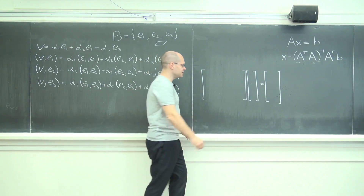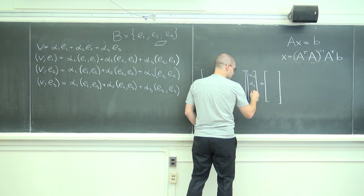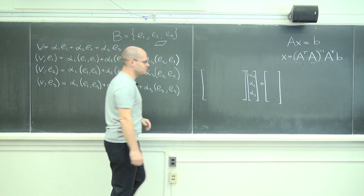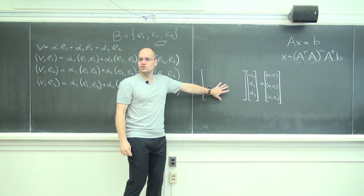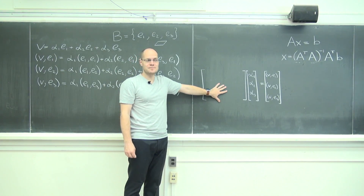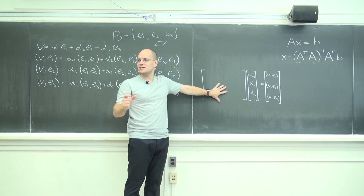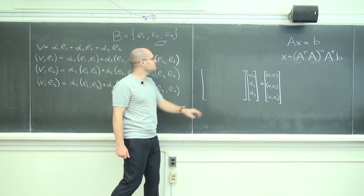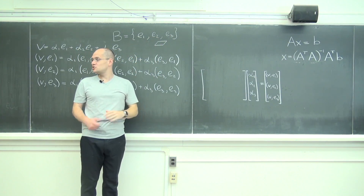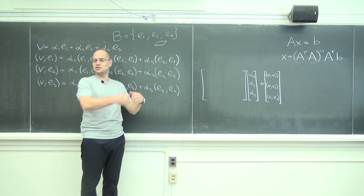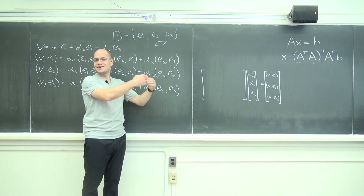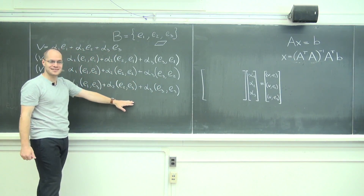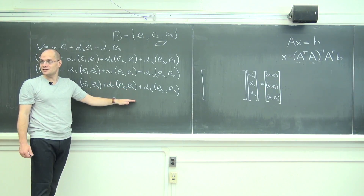The unknowns are α₁, α₂, α₃. The right-hand side is V·e₁, V·e₂, V·e₃. What goes into the matrix A? The pairwise inner products of the elements of the basis. With three basis elements e₁, e₂, e₃, I can pair them up in nine different ways — e₁·e₁, e₁·e₂, e₁·e₃, e₂·e₁, e₂·e₂, e₂·e₃, e₃·e₁, e₃·e₂, e₃·e₃ — nine different ways, all represented in the matrix.